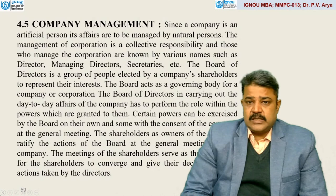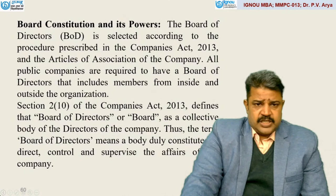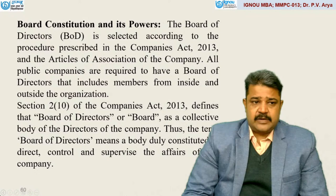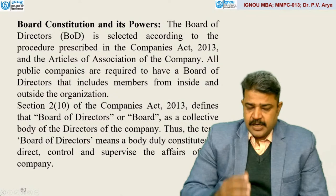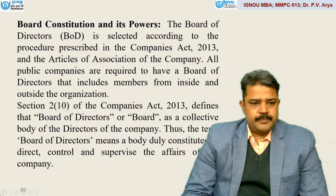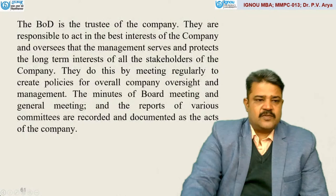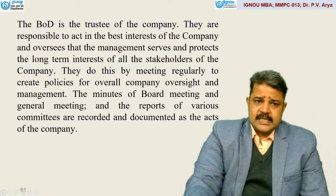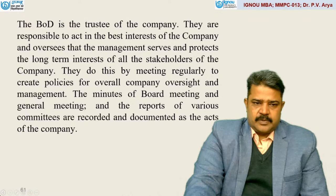Now let's move to company management. Since a company is an artificial person, it needs to be managed by natural persons — directors, managing director, secretaries, board of directors. The board of directors, BOD, is selected according to the procedures prescribed in the Act and the Articles of Association. All public companies are required to have a board of directors that includes members from inside and outside of the organization depending upon the size. Section 2, Subsection 10 of the Companies Act defines the board of directors as a collective body of the directors of the company — a body duly constituted to direct, control, and supervise the affairs of the company. They are trustees of the company, responsible to act in the best interest of the company, and protect the long-term interest of all stakeholders.